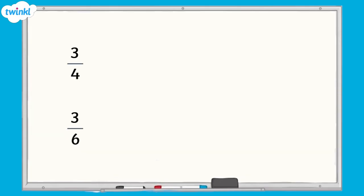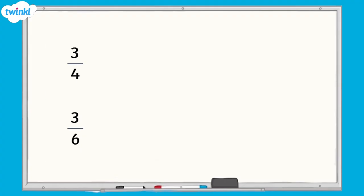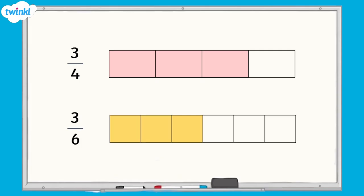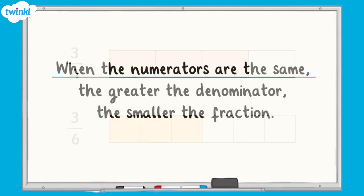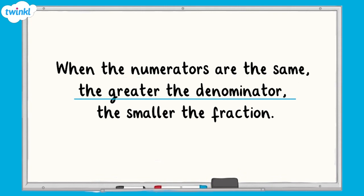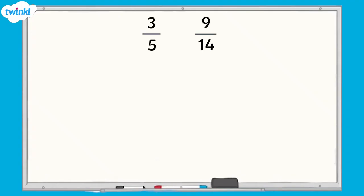Let's look at a different example. Here we have two fractions with the same numerator: 3 quarters and 3 sixths. If we represent them using bar models of the same size, we can see that 3 quarters is greater than 3 sixths. This leads us to the conclusion that when the numerators are the same, the greater the denominator, the smaller the fraction. This is a really useful fact to know, but what if we need to compare two or more fractions with different numerators?